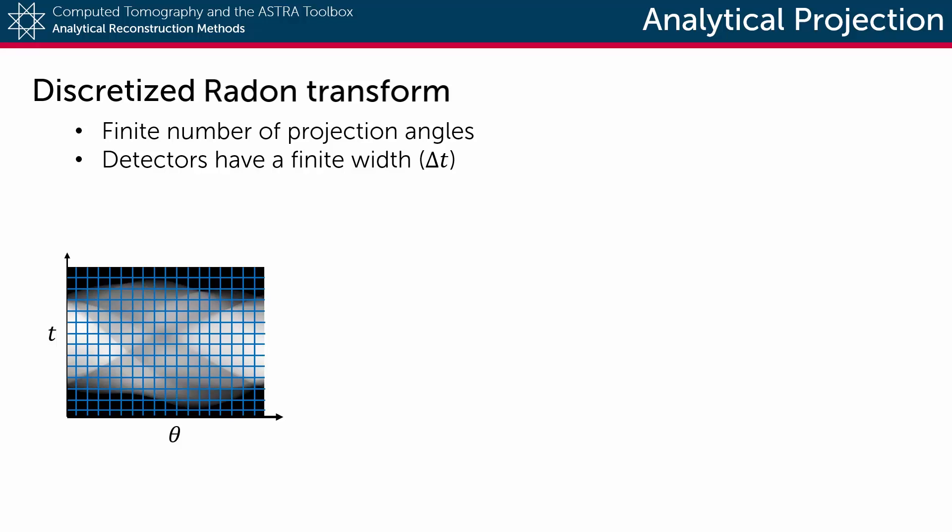Secondly, we must note that detectors have a finite width. What happens in practice is that one detector pixel will measure data from all x-rays that end up in that detector bin.